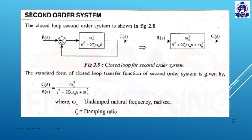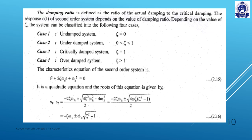Second order system. The second order system response has a basic transfer function: C(s)/R(s) = ωn² / (s² + 2ζωns + ωn²). Here ωn is the undamped natural frequency in radians per second, and ζ (zeta) is the damping ratio. There are 4 systems based on the damping ratio: zeta = 0, zeta < 1, zeta = 1, and zeta > 1 — the over-damped system. Our characteristic equation classifies the system.